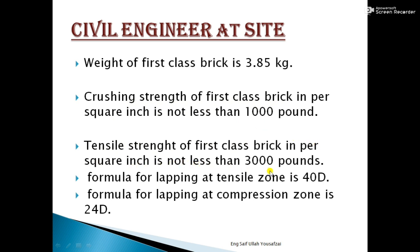Here we will discuss the lapping formulas. The formula for lapping at the tensile zone is 40d, where d is the diameter of the bar used in the reinforcement. The formula for lapping at the compression zone is 24d, where d is the diameter of the bar used in the reinforcement. So we multiply the bar diameter by 24 to get the lapping length in the compression zone.